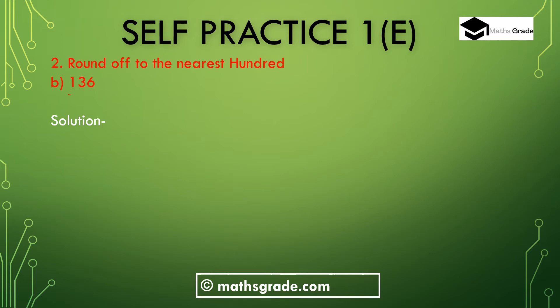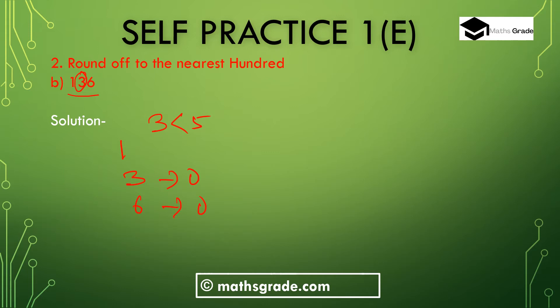Now question number 2, bit B: 136. We have to round off 136 to the nearest 100. First look at the 10th place digit — here it is 3, which is less than 5. So just write down the 100th place digit as it is, that is 1. Write down 0 in the 10th place digit and 0 in the unit place digit. So 136 rounded off to the nearest 100 will be 100.